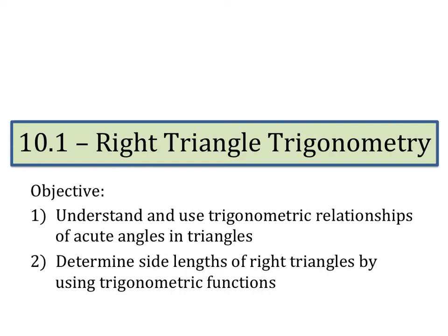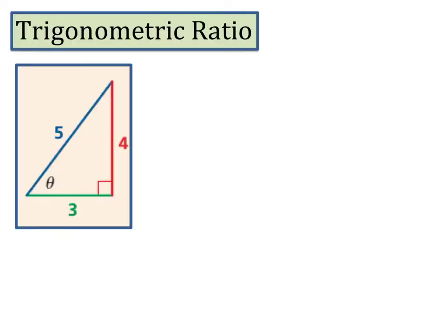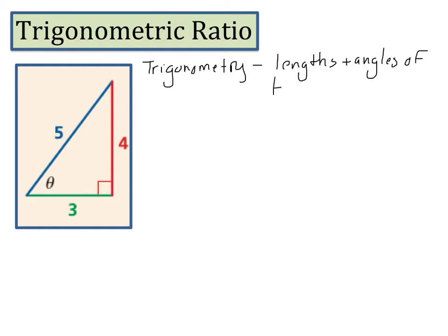Welcome to Right Triangle Trigonometry. Today's objectives are to understand and use trigonometric relationships of acute angles and triangles, and to determine the side lengths of right triangles by using trig functions. Trigonometry is the study of lengths and angles of triangles — specifically, the relationship between the lengths and angles of triangles.